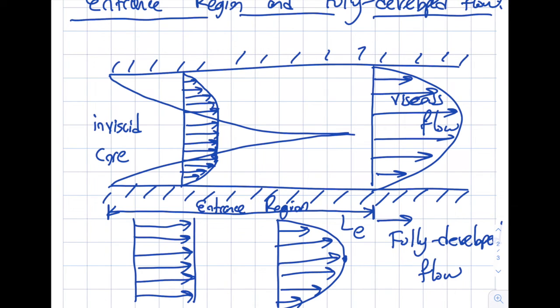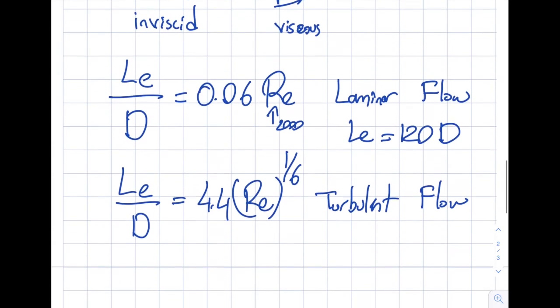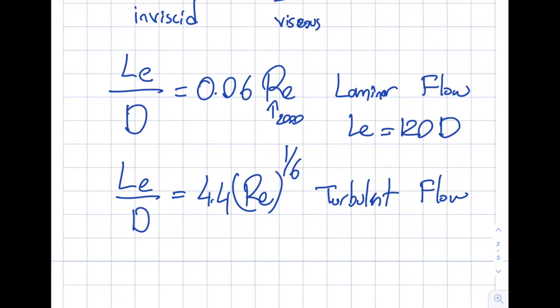That's a fairly long distance, so you really need to be careful. My recommendation is always to check the length of the entrance region and check the length of the pipe that's given to you to see how much impact it's going to have. One other thing that is worth noting here is that the turbulent flow will get a lower l_e value, so entrance region is typically much shorter in turbulent flows as opposed to laminars.